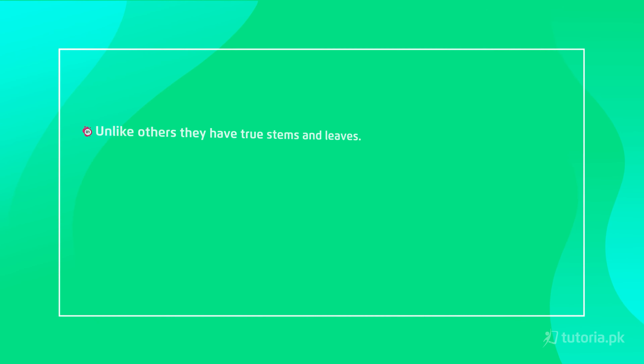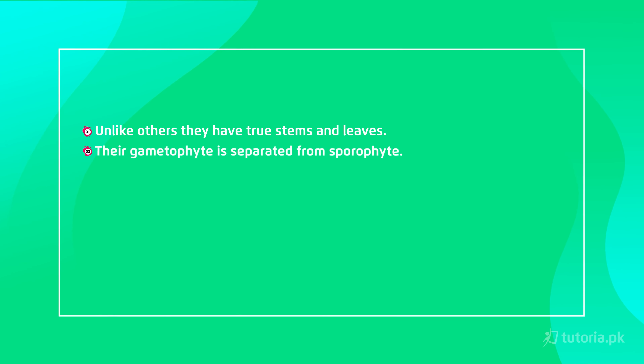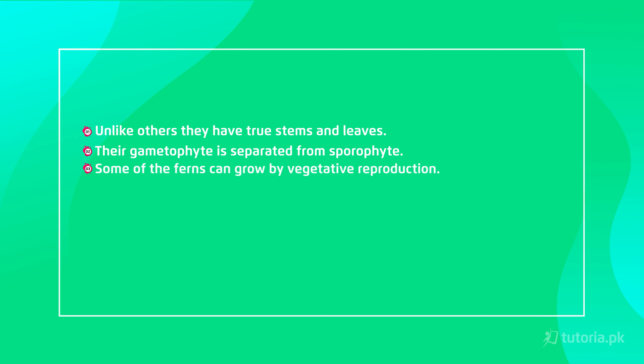Among all these groups, ferns are the most successful. Why were they so successful? Let's understand the reasons. Unlike others, they had true stems and leaves. Their gametophytes are separate from sporophytes. And importantly, sperms are produced through vegetative reproduction — that is, they could produce sperm independently. These were the key important points. Now let's talk about the fern life cycle with the help of a diagram.